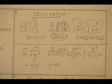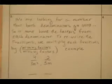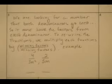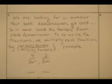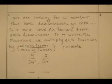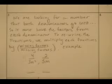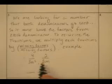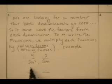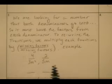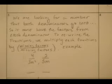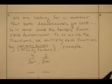Alright. So here we go. We're looking for a number that both denominators go into. So it must have the factors from each denominator. To rewrite fractions, we multiply each of the fractions by the missing factors over the missing factors. For example, to find... Another way to look at it is if you list all the factors of everything. If you look at, like, so there's a 3, an m, a 5, and an m, and you take the largest exponent of the factor. But we're not going to bother doing that right now. We should keep this kind of elementary.